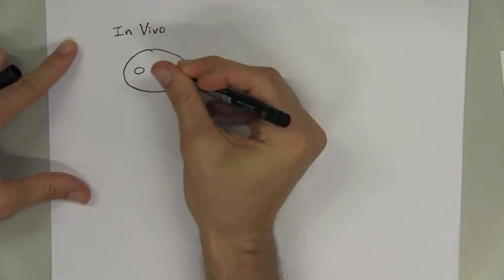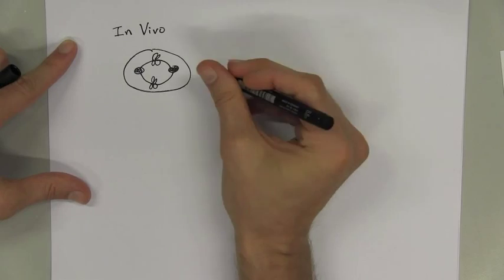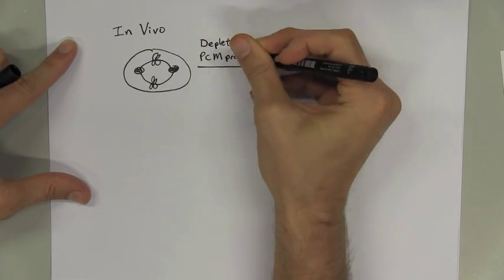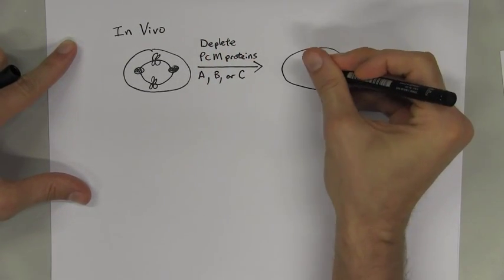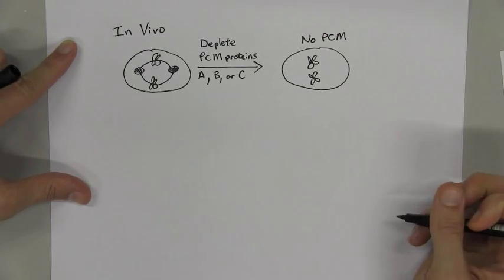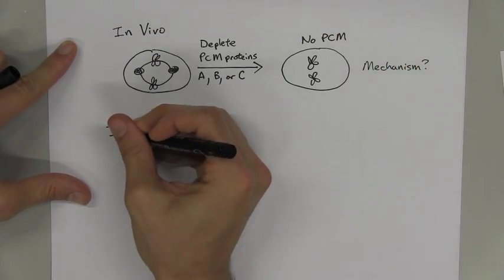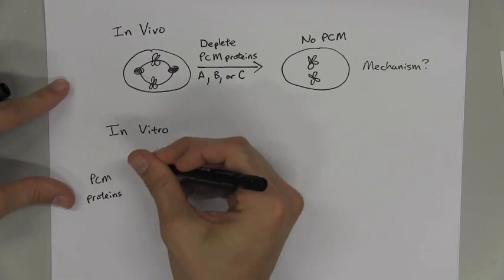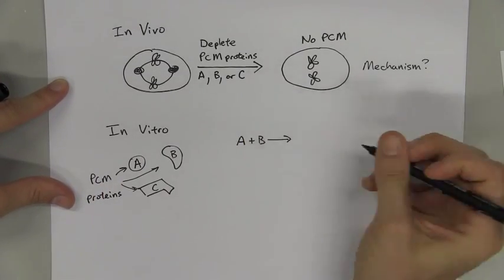So far, the mechanisms underlying PCM assembly have been difficult to nail down using in vivo approaches, primarily due to the complexity of the PCM. Thus, the goal of my research is to reconstitute PCM assembly in vitro, using a minimal set of purified recombinant proteins.